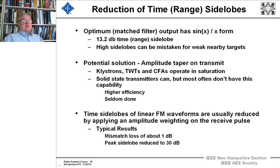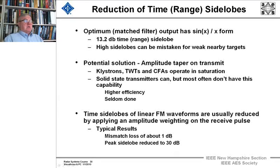Time side lobes of linear FM waveforms are usually reduced by applying amplitude weighting on the received pulse. Typical results are a mismatched loss of about 1 dB, but you'll get the peak side lobes reduced down 30 dB, which is good for resolving targets. So you lose 1 dB in power but gain 30 dB in rejecting the side lobes you have with a typical sine X over X waveform.